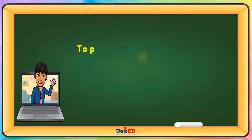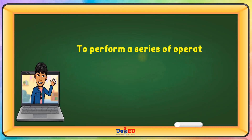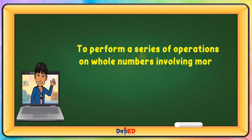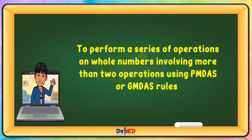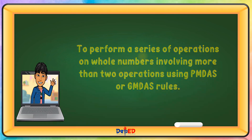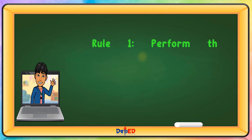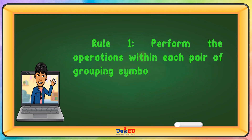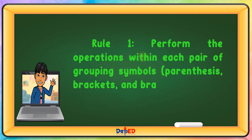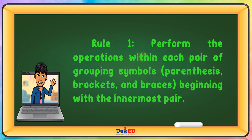To perform a series of operations on whole numbers involving more than two operations using PEMDAS or GEMDAS rules. Rule No. 1: Perform the operations within each pair of grouping symbols — parentheses, brackets, and braces — beginning with the innermost pair.